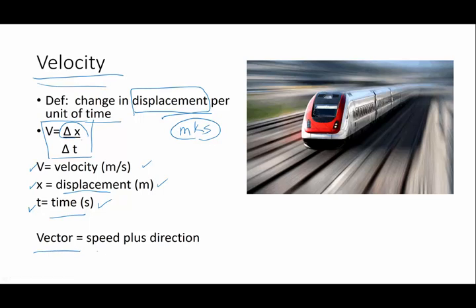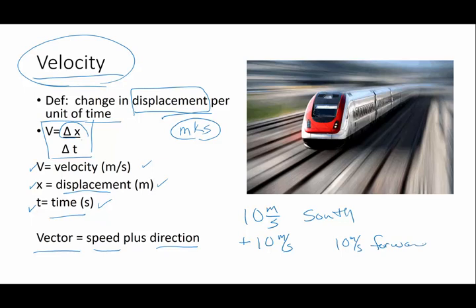Or in other words, it is speed plus direction. So if you're describing a velocity, you would not say that an object is going 10 meters per second. Instead, you would say an object is going 10 meters per second south, or it has a positive velocity of 10 meters per second, the positive indicating the direction. Or you might say it's 10 meters per second forward. There are lots of ways to indicate the directionness of a vector, but when you're dealing with velocities, you have to pay attention to that direction.